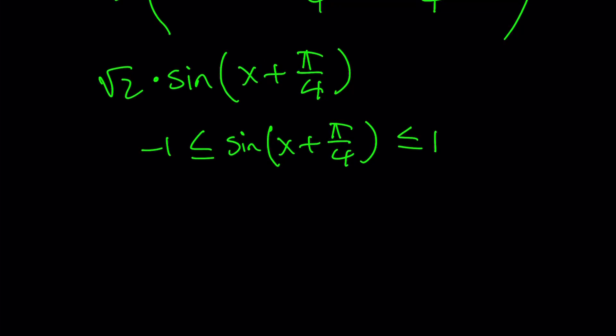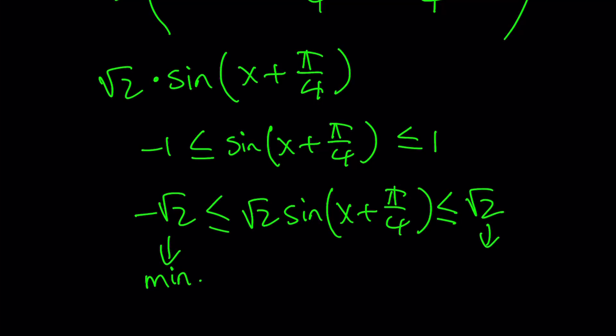So when you multiply by square root of 2, you're going to get the values, our range for this function, which is going to be from negative root 2 to positive root 2. So this is going to be the minimum value for this function, and this is going to be the maximum value for this function. And remember, this is the same thing as sin x plus cos x.